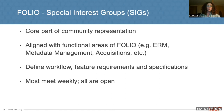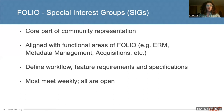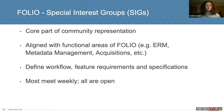The core of Folio is its special interest groups. These groups are aligned with the functional areas of Folio, such as electronic resources management or metadata management. They define workflow, feature requirements, and other specifications for the Folio library services platform. Most special interest groups meet weekly, and all are open for anyone to attend.